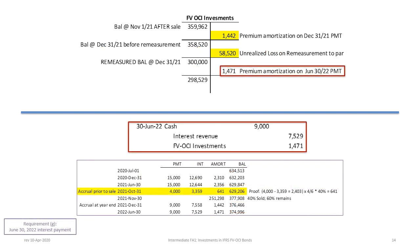Now we record the June 30, 2022 interest payment. We debit cash $9,000. Using the original amortization table with a balance of $376,466, times 2%, gives interest revenue of $7,529. So we credit interest revenue $7,529. The difference is premium amortization of $1,471, so we credit FVOCI investments $1,471. The resulting T-account balance sheet balance is $298,529, which differs from the amortization schedule balance — but that is expected and acceptable.